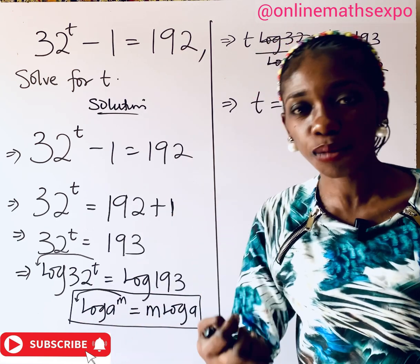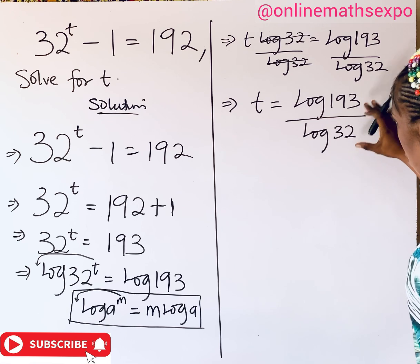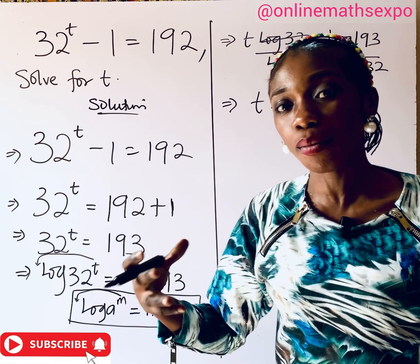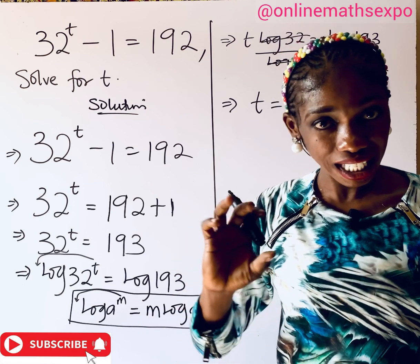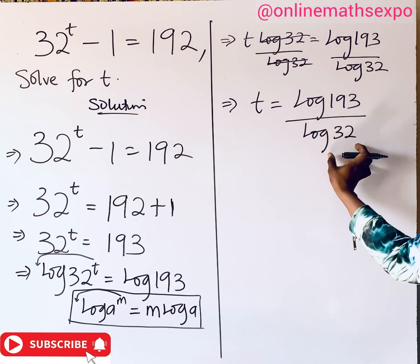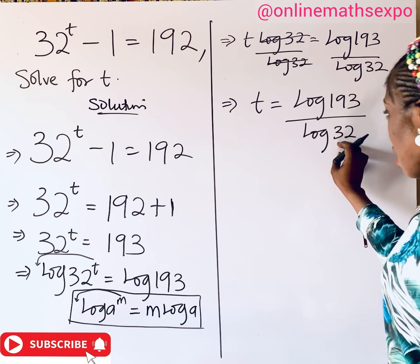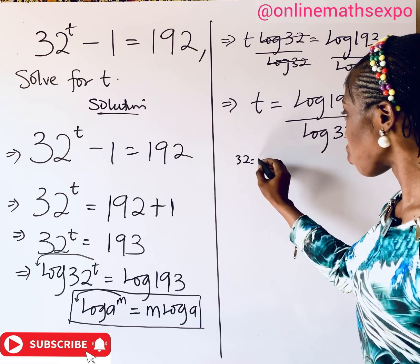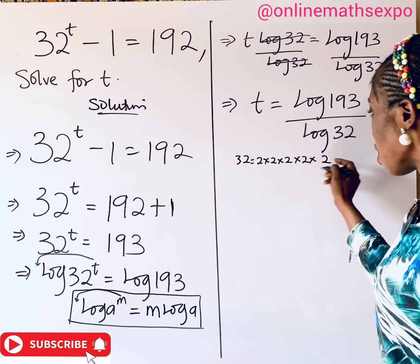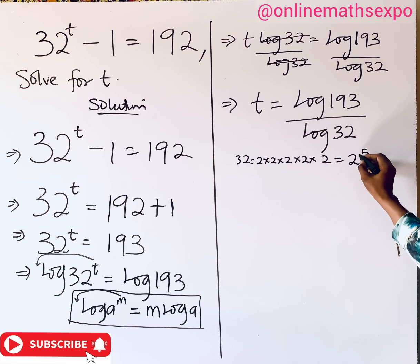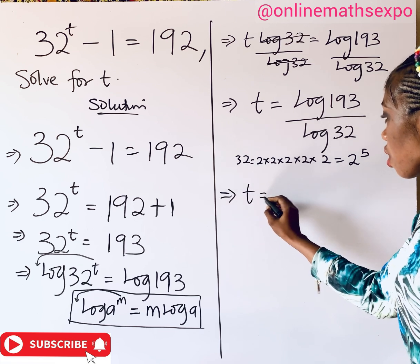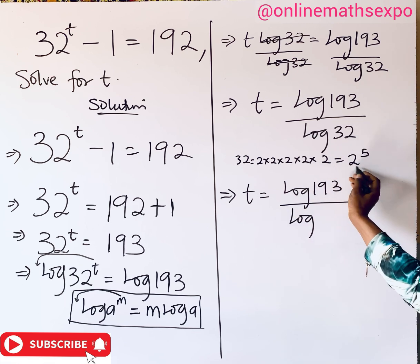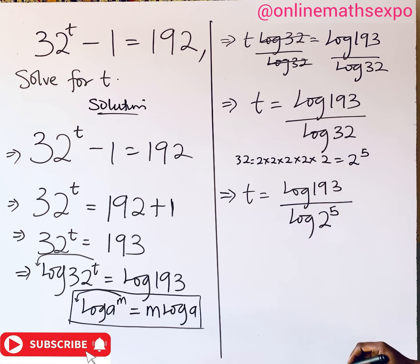If you are not allowed to use a calculator, here is what you do. We simplify further. 193 is a prime number, and since it's prime, the only numbers that divide it are 1 and 193, so there's nothing to simplify there. But for 32, we can express it as a prime factor: 32 is the same as 2 raised to the power of 5. So we now have t equals log 193 all over log of 2 raised to the power of 5.